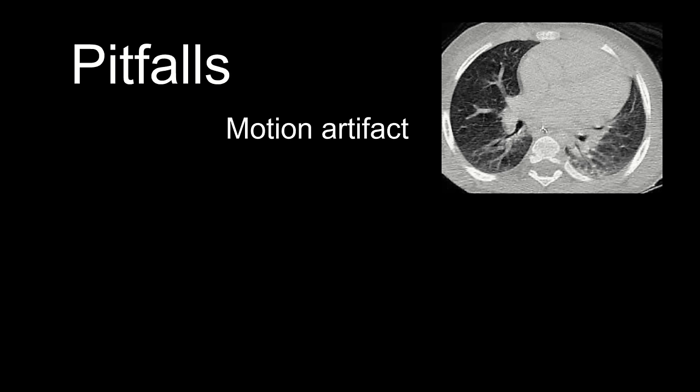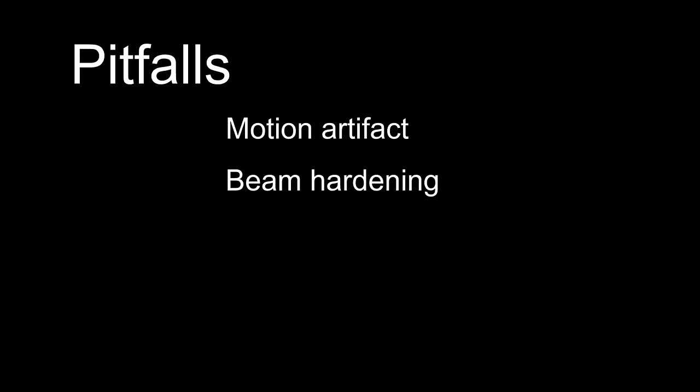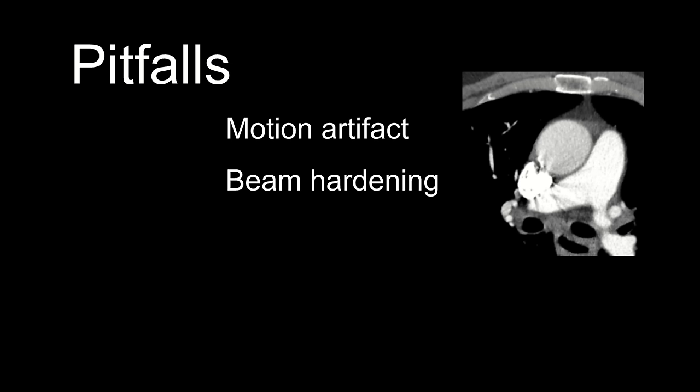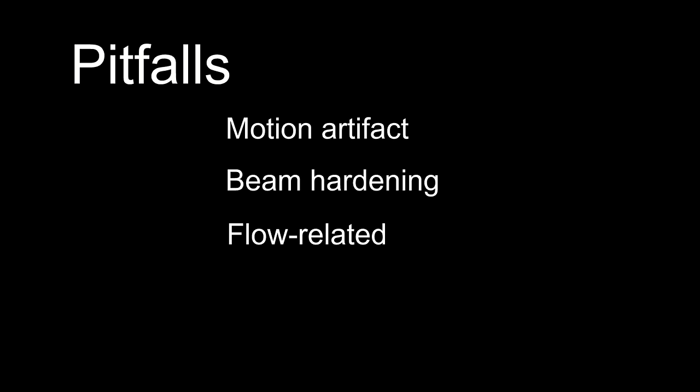There are a few common pitfalls that can lead to over-diagnosis of PE on CTPA. The most common is motion artifact — if you're questioning something small in segmental or subsegmental branches, switch to lung window and see if there's associated motion artifact in that region, especially at the lung bases. Beam hardening artifact from dense contrast can mimic PE in adjacent vessels, and there are flow-related artifacts from non-opacified blood from the IVC mixing with opacified blood.